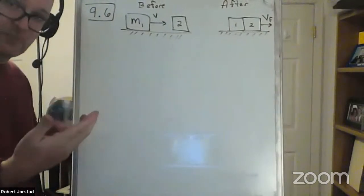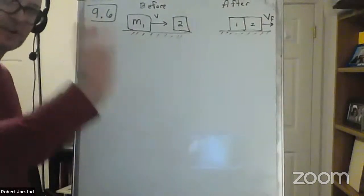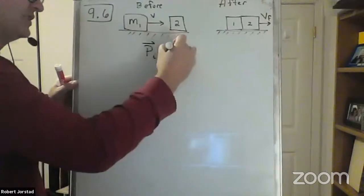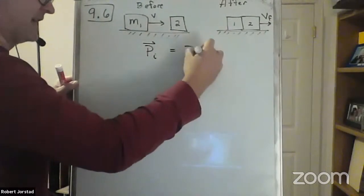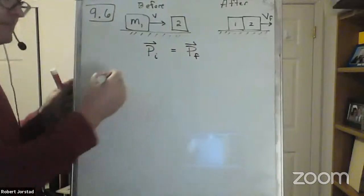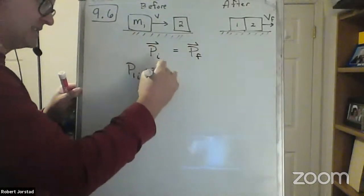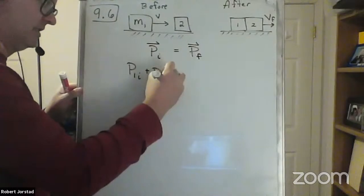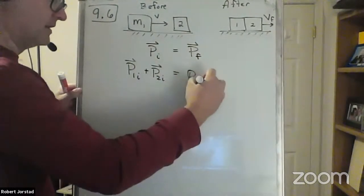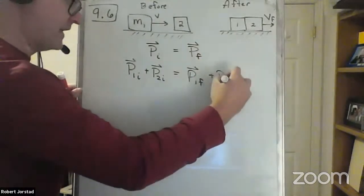So we discussed: is conservation of momentum valid? Yes, because external forces are negligible. So it's okay to say P initial equals P final. That's P1 initial plus P2 initial equals P1 final plus P2 final.